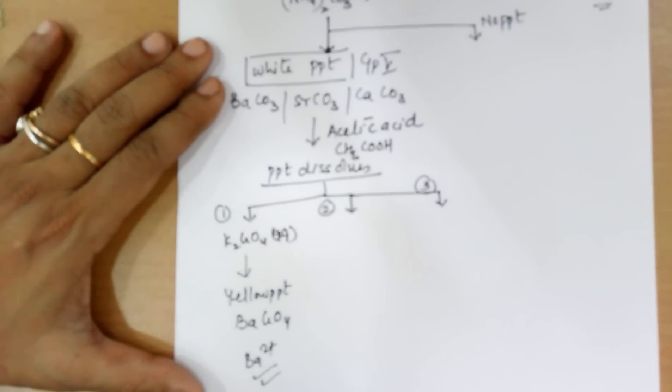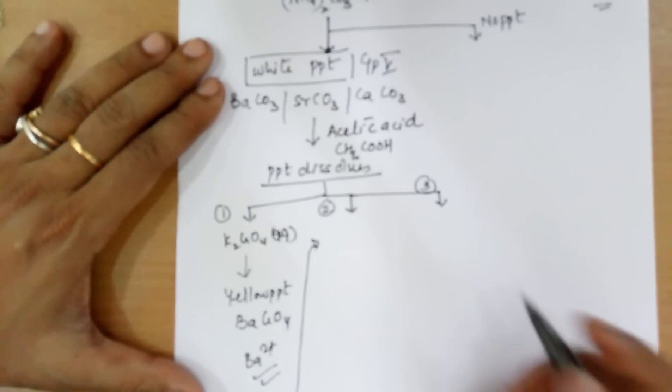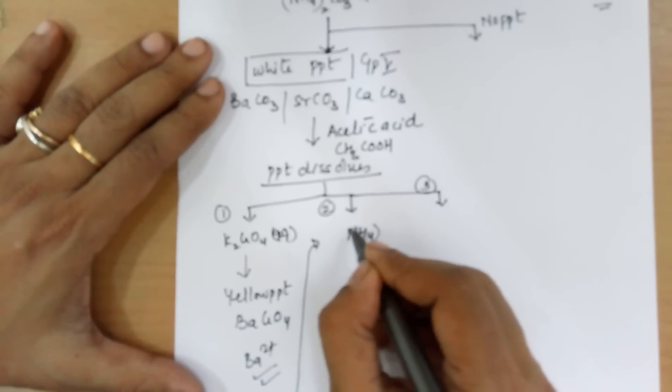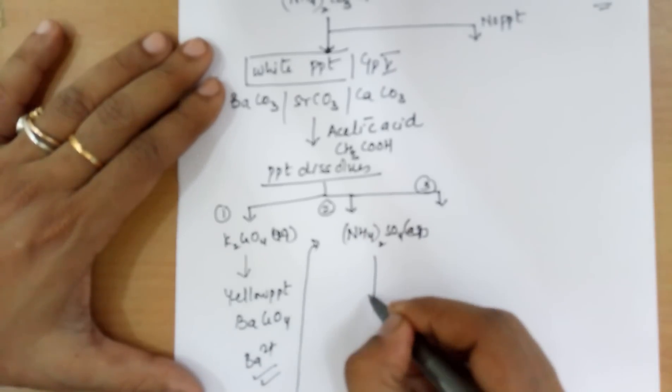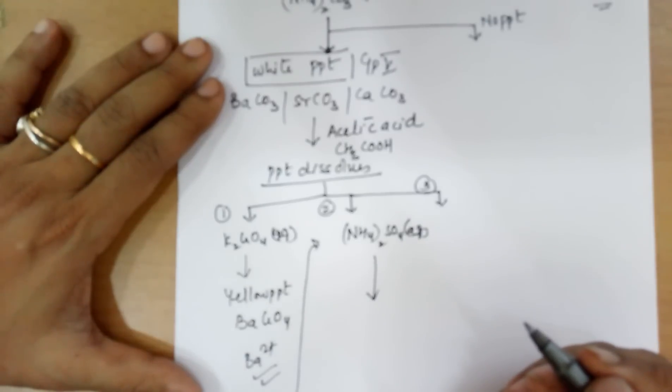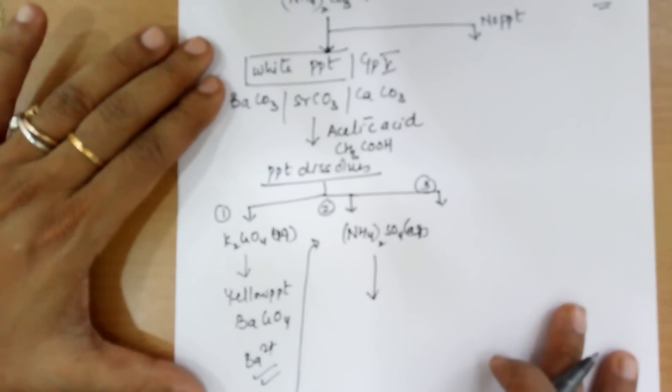If you don't get this, then you proceed for the second part. In the second part, you need to add ammonium sulfate solution. Wait for some time. Shake the solution a bit. It takes around 5 minutes for this PPT to come.